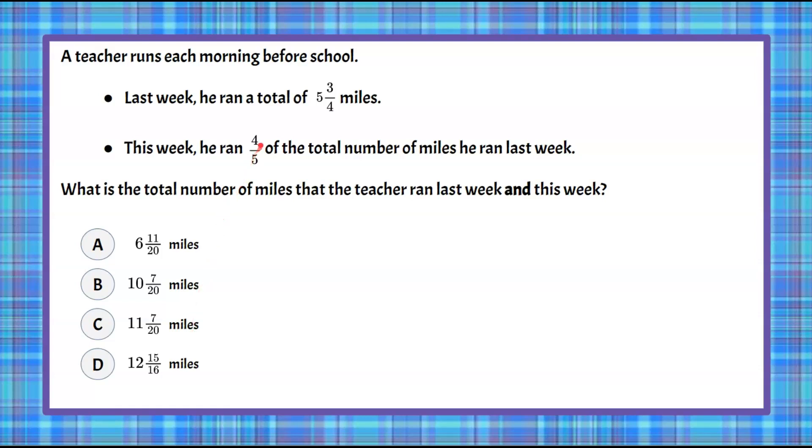Welcome back. So we know that last week, he ran 5 3/4 miles. This week, he ran 4/5 of the total miles he ran last week. And we are going to take last week and this week and combine them, and then pick our answer choice. So understanding that the first week was 5 3/4, then 4/5 of the 5 3/4.